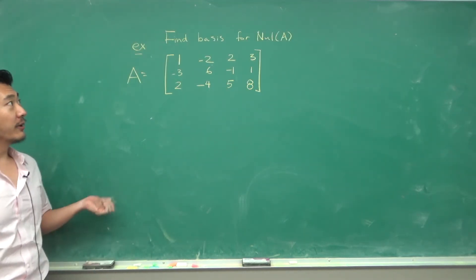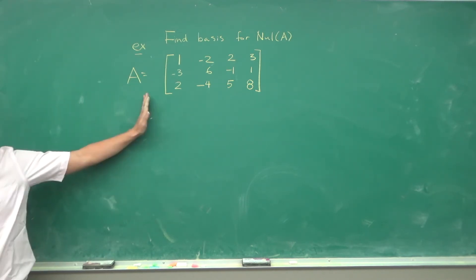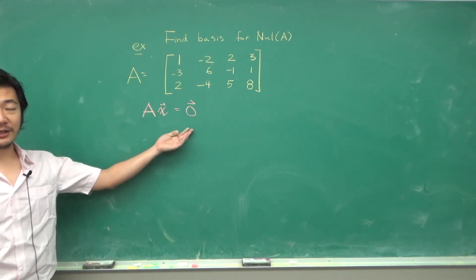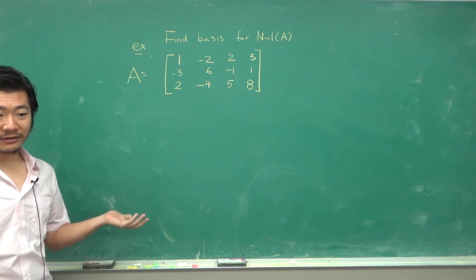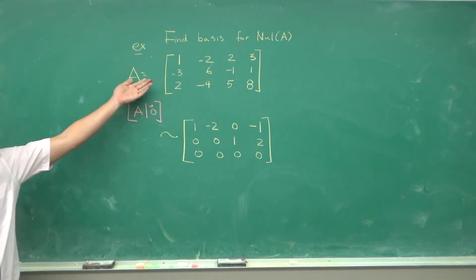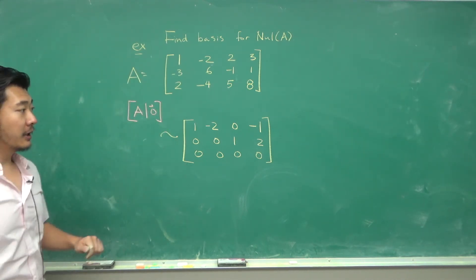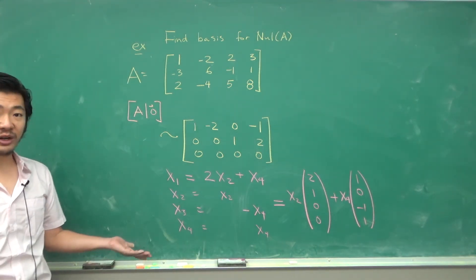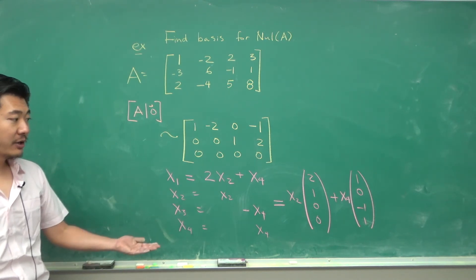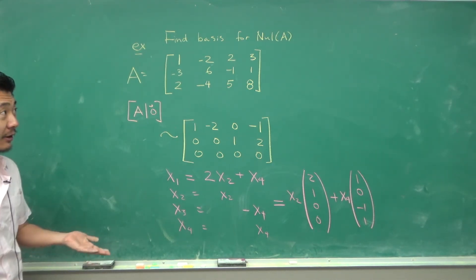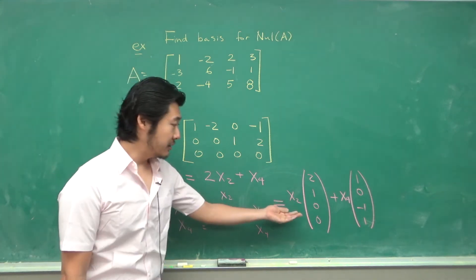Now let's look at an example: finding the basis for the null space of A. We want vectors such that A times x equals the zero vector. We form the augmented matrix and row reduce to find the reduced row echelon form. Writing the solution in parametric form, x2 and x4 are free variables. All linear combinations of these two vectors are solutions to the homogeneous equation, so a basis for the null space is given by these two vectors.